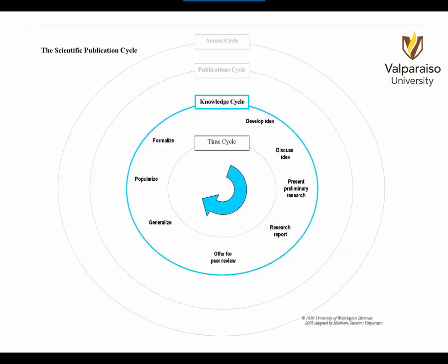The second circle is the knowledge cycle. The circle illustrates how information is developed, evaluated, and reformatted over time before it becomes accepted as scientific knowledge. Knowledge grows from developing an idea or hypothesis, to testing it, to evaluating and reviewing the new information. As the information becomes acknowledged and accepted, it becomes generalized, popularized, and formally taught to the next generation as accepted knowledge. Accepted knowledge may change as new information becomes available.